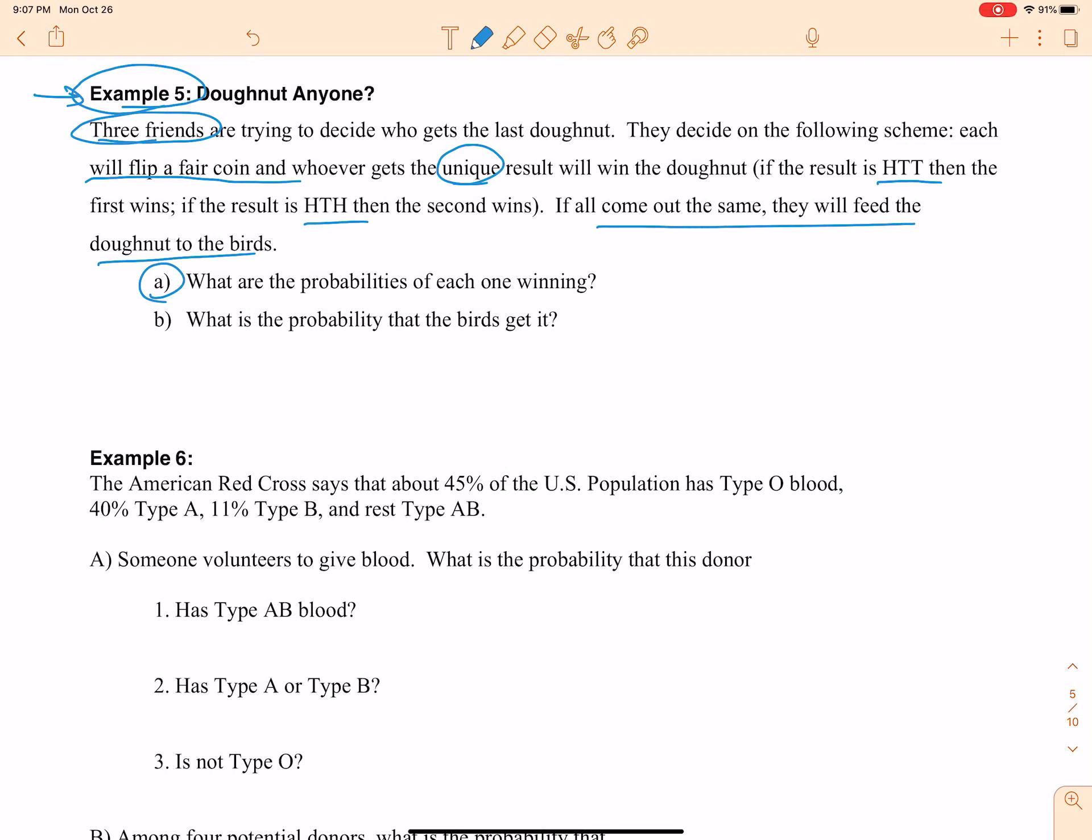So the probability for each single person winning is what we need to think about. Well, here's the deal. If the first one is the unique one, that can happen in one of two ways. They can either get heads and the other two can get tails, or they can get tails and the other two can get heads. So think of this as the first person.